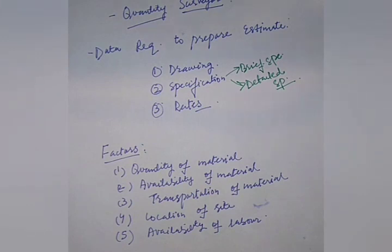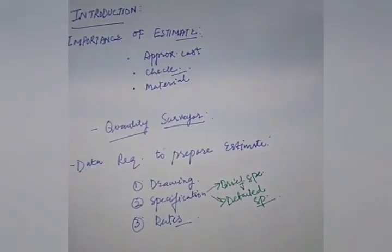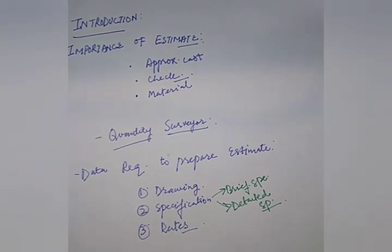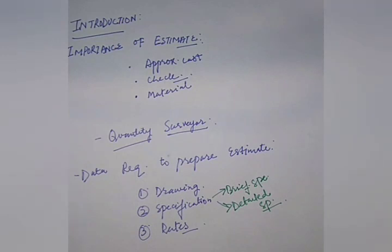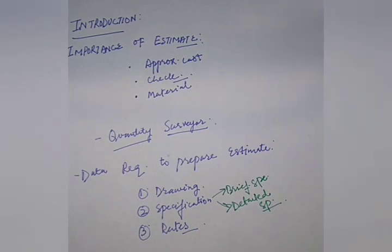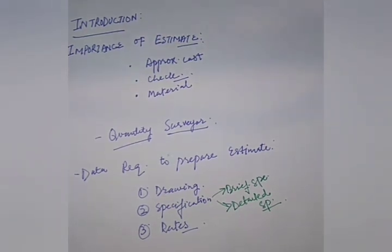In this video lecture, we have learned what we basically mean by an estimate — the probable cost of any project before it is taken up. We talked about its importance, the quantity surveyor and his job, the data required to prepare an estimate, and the factors to be considered before preparing a detailed estimate. In the next lecture, we will talk about the different types of estimates — the preliminary estimate, the detailed estimate, and their types — and our numericals will begin.